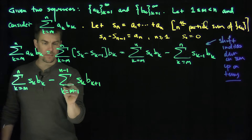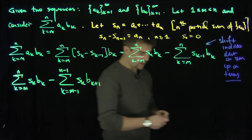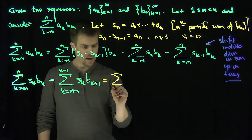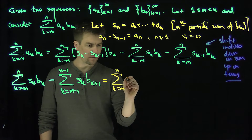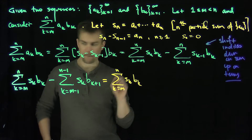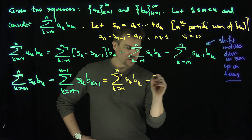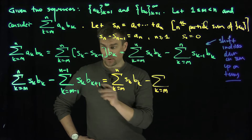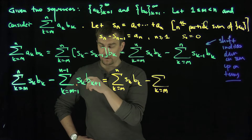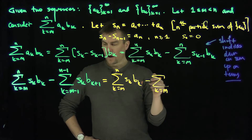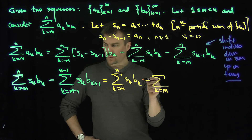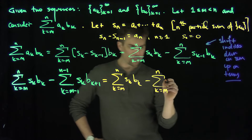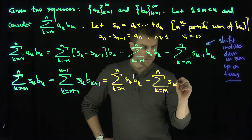Now I'd like to combine these sums, but they run over different index ranges. So I rewrite the second sum starting at m instead of m−1, running up to n instead of n−1. That means I've added an extra term at the bottom and removed one at the top, giving the sum of S_k * b_{k+1} for k from m up to n.